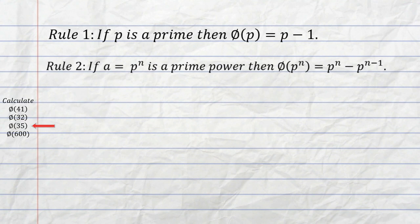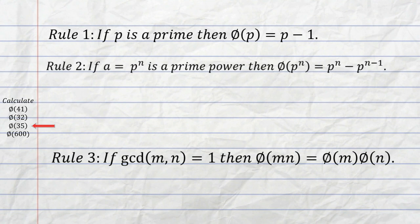But anyway, our rule number 3 tells us what to do if we've got the product of two numbers that are co-prime, or the GCD of those two numbers is equal to 1. So it says that if the GCD of m and n is equal to 1, then phi of m times n is just equal to phi of m times phi of n.